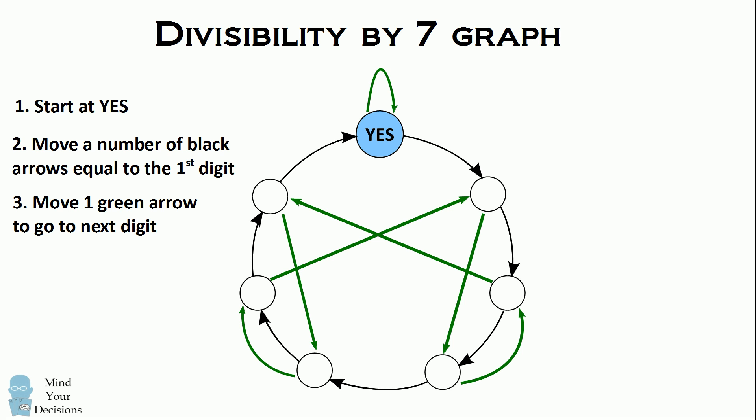Before you get to the next digit of the number, you move one green arrow which brings you to another circle. You repeat these steps for each digit in the number except for the very last digit where you don't move a green arrow. The number will be divisible by seven if you end up back at the circle that says YES.